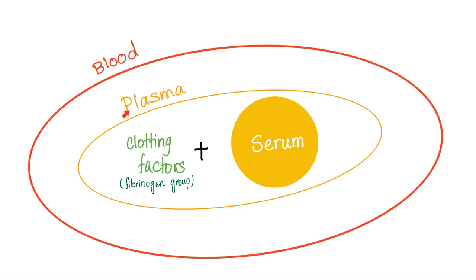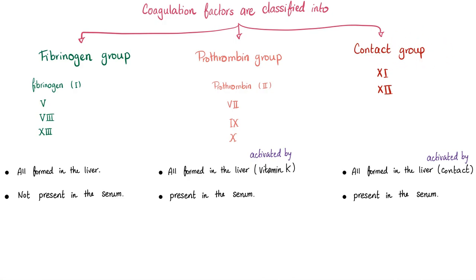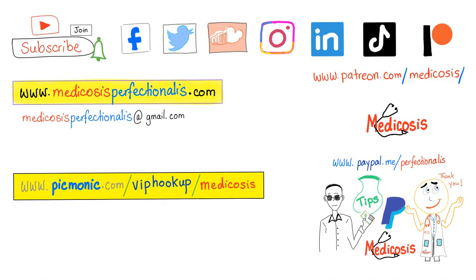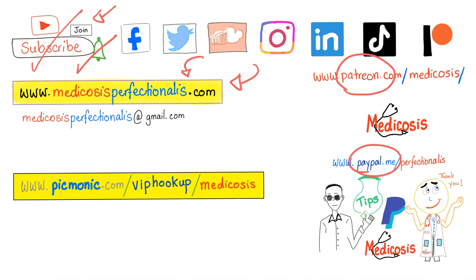Blood is made of plasma and cells. Plasma is made of serum and the clotting factors — specifically the fibrinogen group (fibrinogen, factors 5+8=13) and factor 2 (prothrombin). Here is everything you need to know about coagulation factor groups. Now a difficult question: which serum protein electrophoresis result is expected in a patient with type 4 renal tubular acidosis? Let me know in the comments — you'll find the answer in the next video. Thank you for watching. Please subscribe, hit the bell, and click join. Be safe, stay happy, and study hard. This is Medicosis Perfectionalis, where medicine makes perfect sense.